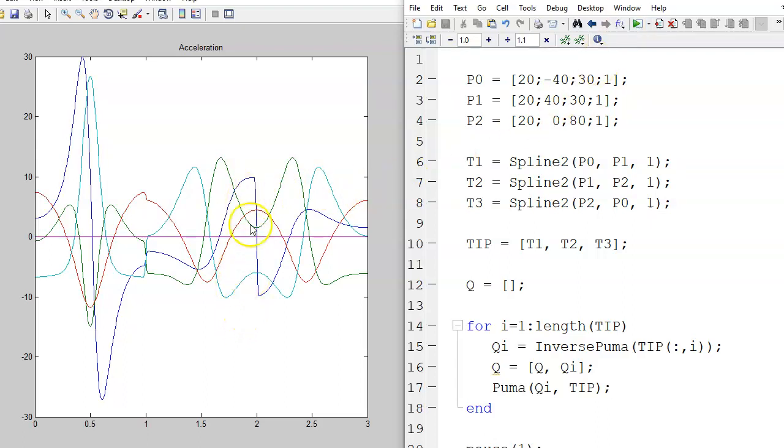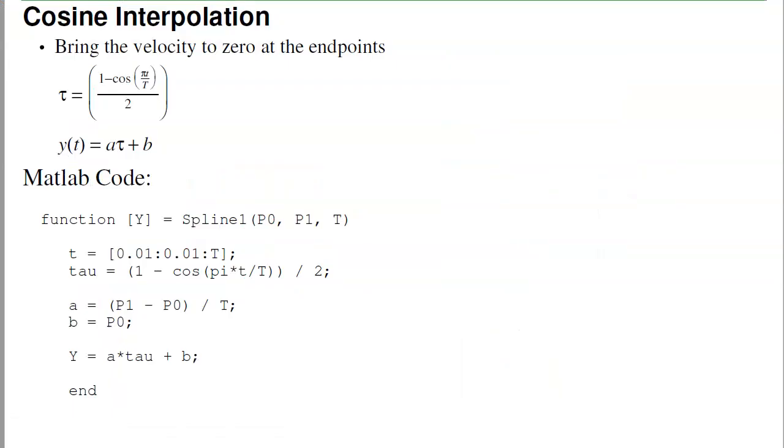I do have this jump discontinuity, though. The second derivative of cosine is minus cosine. So at the points one second and two seconds, where you go to a different path, I have this jump discontinuity in acceleration. That's usually not a problem, but you're just going to have a big jump discontinuity in acceleration of the robot. That's the second type of interpolation.